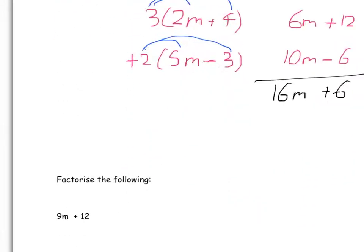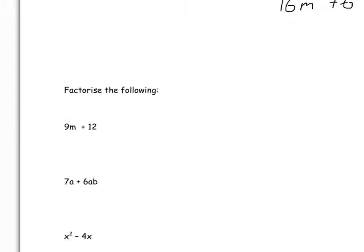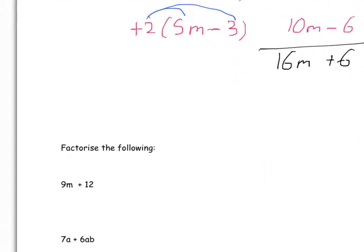So that is expanding. But what about factorising? Well, factorising is the opposite to expanding. Instead of multiplying out the brackets, you put it back into the brackets. So, 9m plus 12. What we have to look at is: is there a common value that goes into both 9 and 12? Do they both appear in a 2 times table? Well, 12 does, but 9 doesn't.